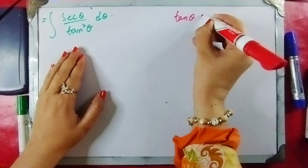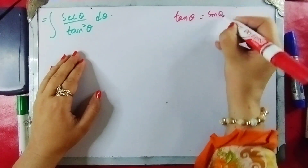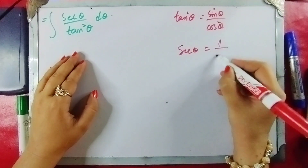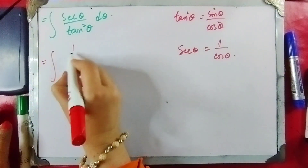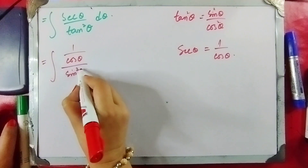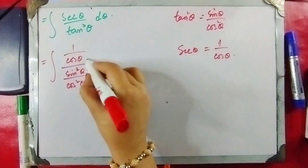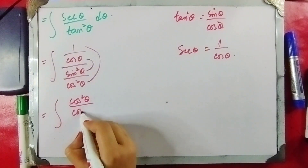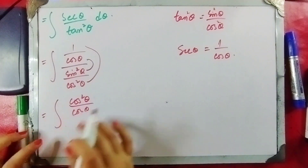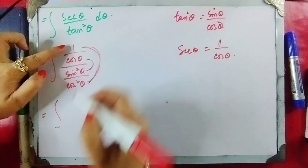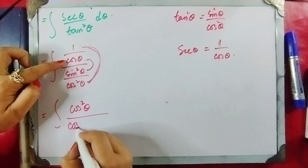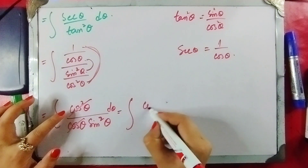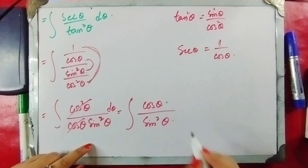If we take tangent of theta, it equals sin of theta over cos of theta. Putting down the square, and secant equals 1 over cos of theta. So the expression becomes sin squared of theta over cos squared of theta, which simplifies to cos squared of theta over cos of theta, giving 1 over cos of theta.